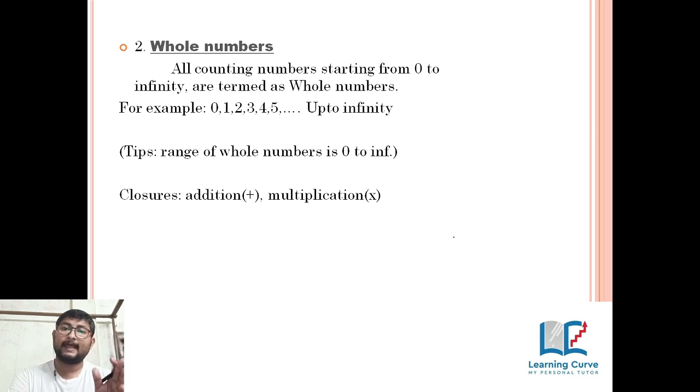But zero is not a natural number, it is a whole number. So what is the range? Range is zero to infinity. Again, the closures are addition and multiplication. That is, whole numbers are closed under addition and multiplication.